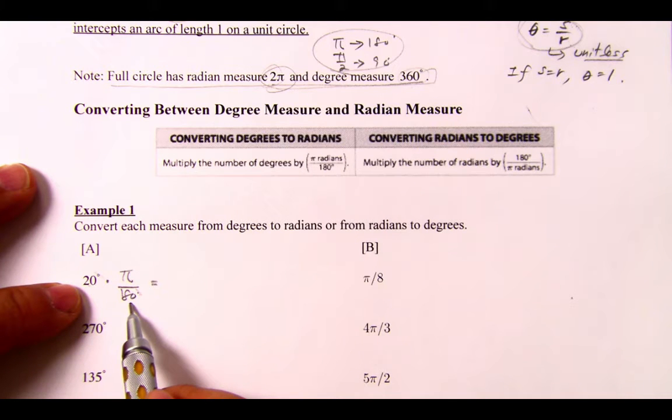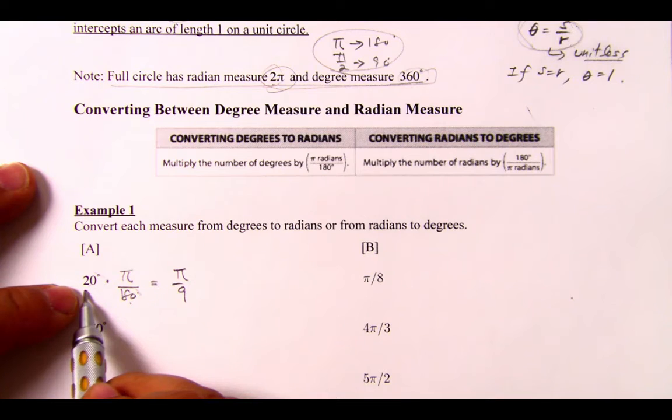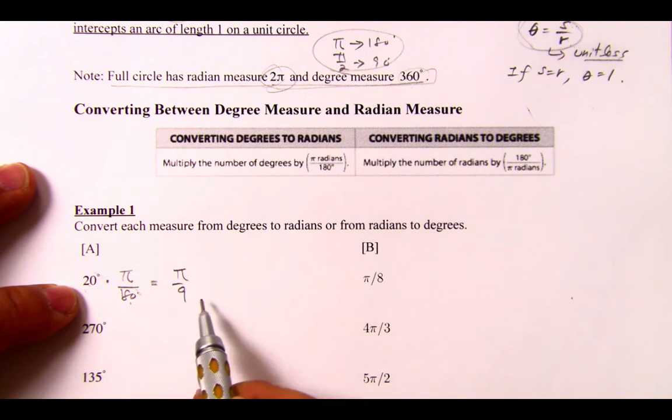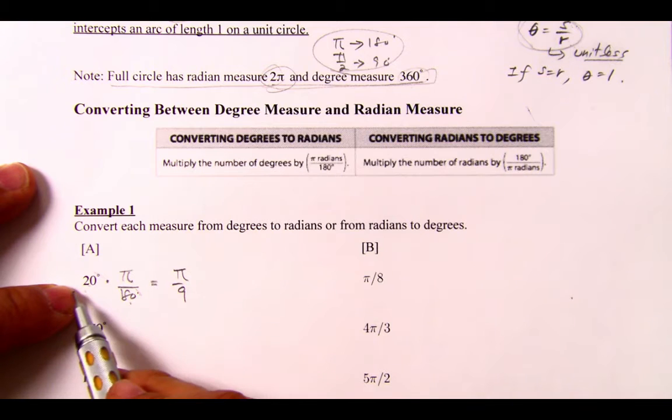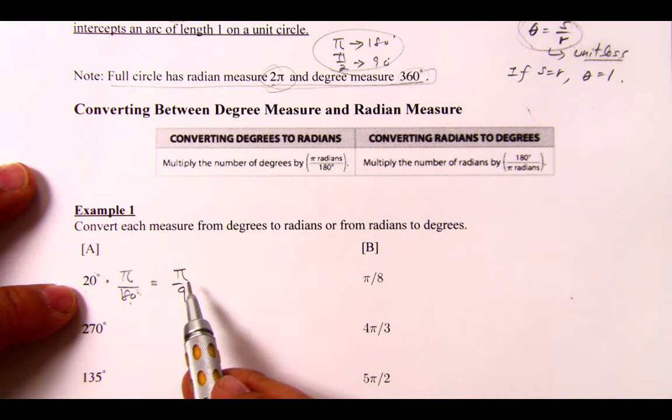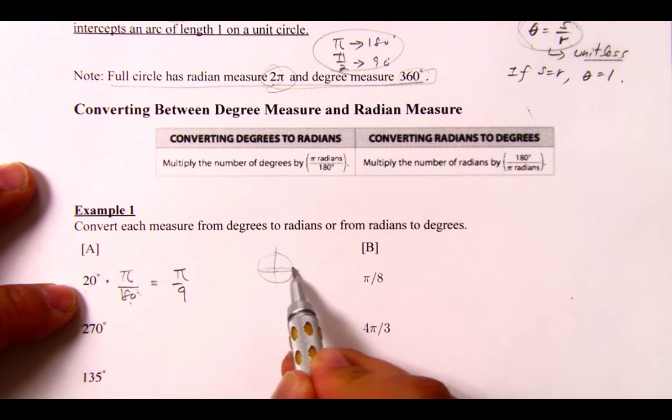20 goes into 280 how many times? 9. So 20 degrees, having multiplied by the conversion factor, tells us that 20 degrees is equal to π over 9 radians. Since π is about 3.14, and that's 9, it's slightly more than one-third. So on a unit circle, 20 degrees is about one-third length from here to here.